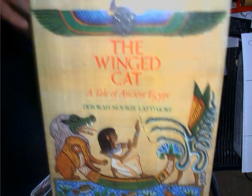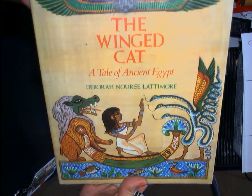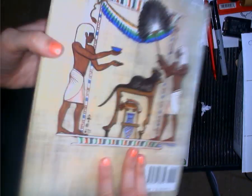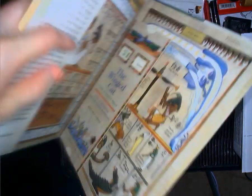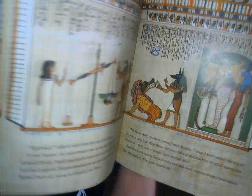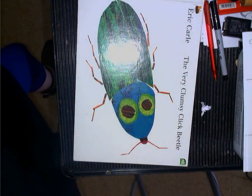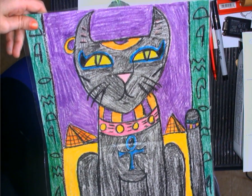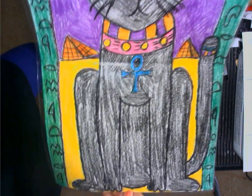All right, boys and girls, we're going to be drawing an Egyptian temple cat, and this is a cat from one of my favorite books, The Winged Cat, which is a book all about ancient Egypt and how they would worship cats and other animals as gods.